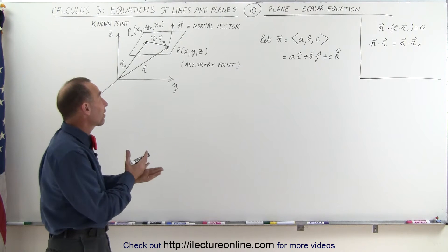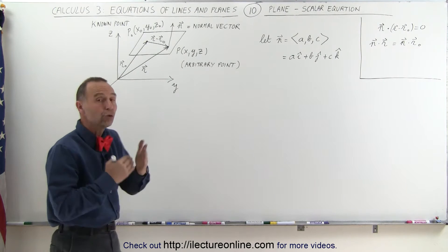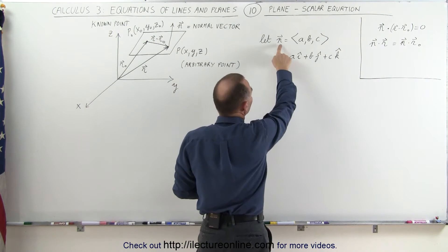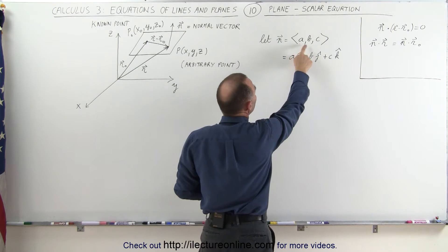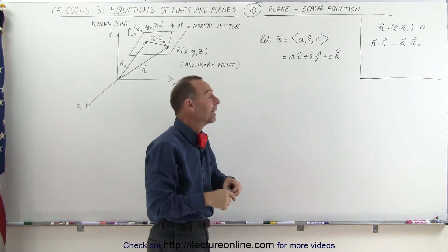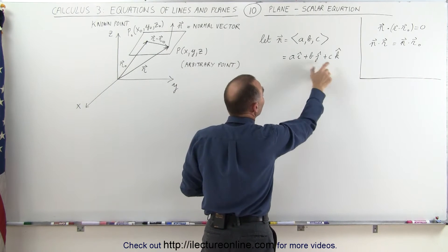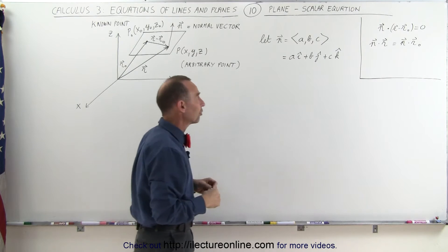To define a plane, you have to have a vector which is orthogonal or normal to the plane. Let's assume that the orthogonal vector n has coordinates a, b, and c. Actually, not coordinates, but has the values for the x, y, and z direction as a, b, and c. a, b, and c, of course, are the scalars of the vector.